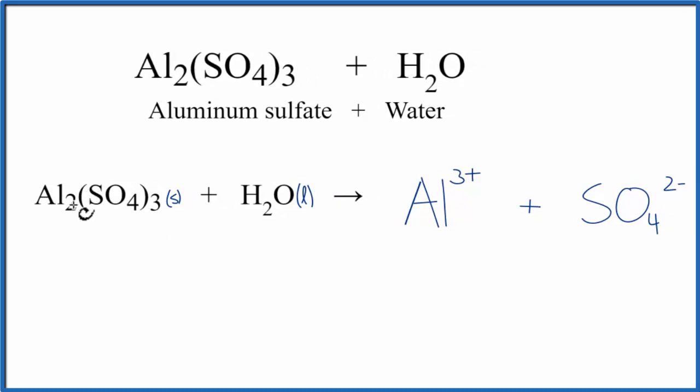Since we have two aluminums here in the aluminum sulfate, we need to write a coefficient of 2 in front of the Al3+. We also have three of these sulfate ions, so we need a coefficient of 3 there as well.